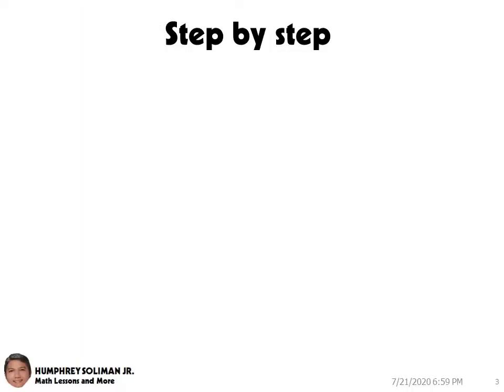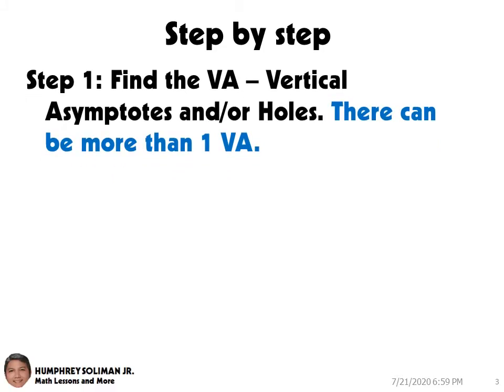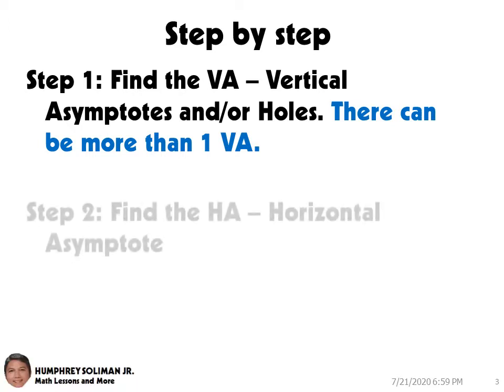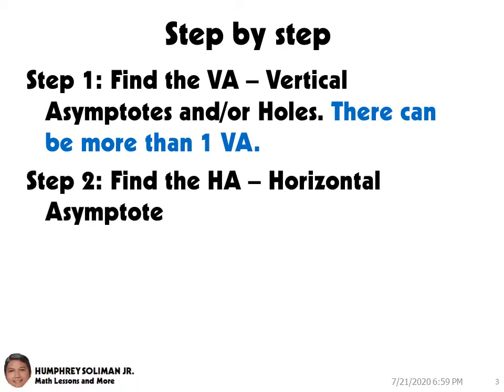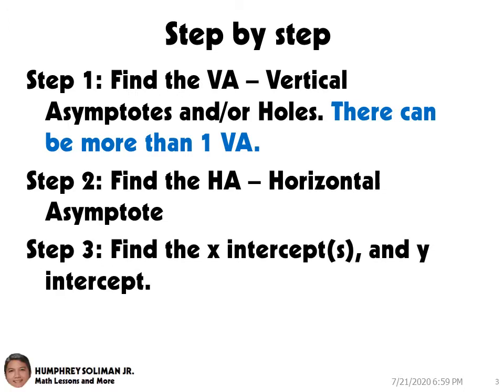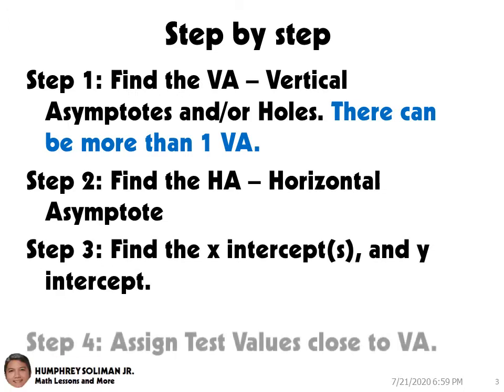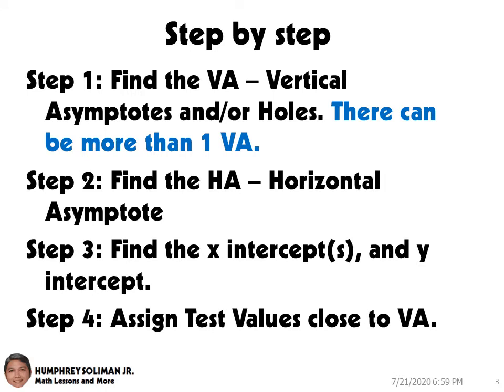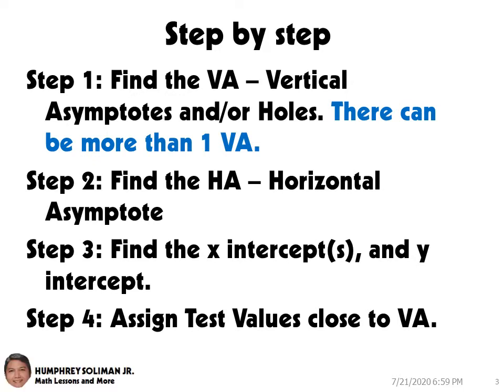We have four easy steps in graphing rational functions. Step number one, find the vertical asymptotes or holes. Remember, there can be more than one vertical asymptote. Step number two, find the horizontal asymptote. Step number three, find the x-intercepts and y-intercepts. Step number four, assign test values close to the vertical asymptote. This will help us get ordered pairs which we can plot close to vertical asymptotes.